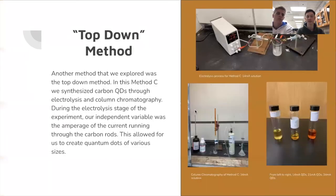For our second method we used the top-down method, which we call method C, and it's a two-step process. First we used our basic solution in electrolysis and we had a power bank to regulate the amperage, and then once that was done we put it through column chromatography to filter the quantum dots. You can see down here we ended up getting three different sizes of quantum dots based on the amperage that we would do in the electrolysis portion.